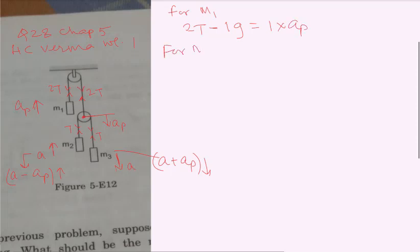For m3: 3g minus t equals m times a, so 3 into a plus ap.